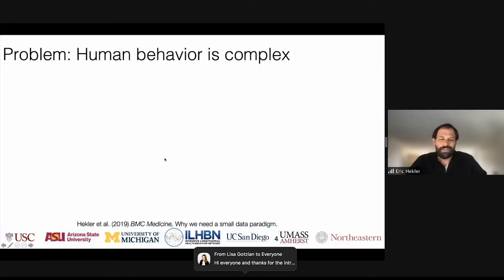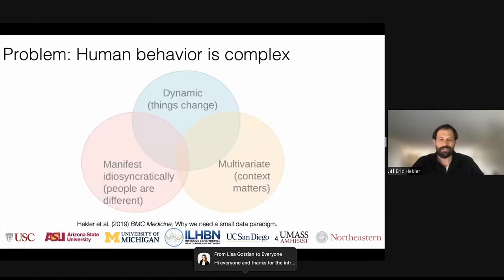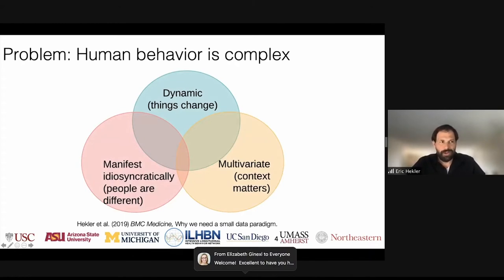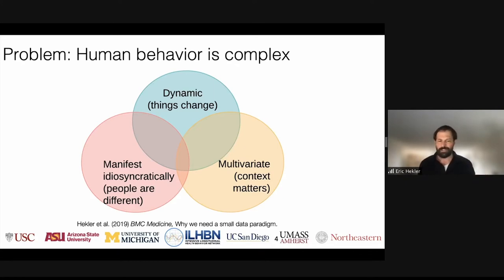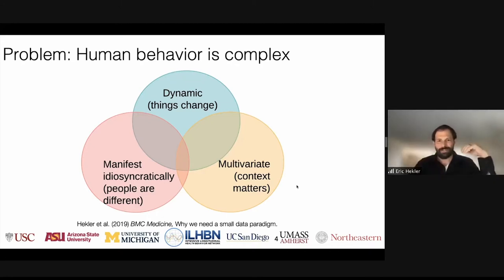So let's start with the problem. The problem is human behavior is complex. When trying to understand human behavior, it's important to remember there's often a variety of variables and factors that have an impact — not just what's going on within the skin, but also outside. I broadly frame this as: context matters. Human behavior and behavior change is dynamic — things are constantly changing — and with these two things, there's a great deal of idiosyncrasy across people. In essence: context matters, things change, therefore people are different.